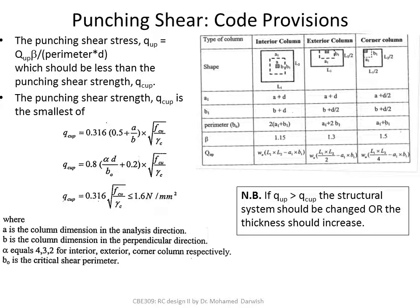Once you prove that the punching shear strength is greater than the punching shear stress, it is safe. However, if the strength is less than the stress, you need to change either the slab thickness or the structural system entirely.